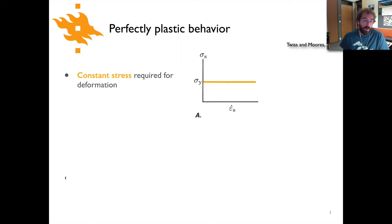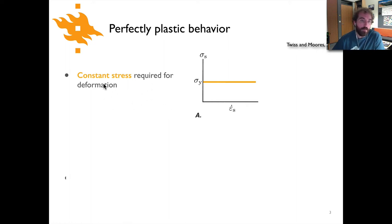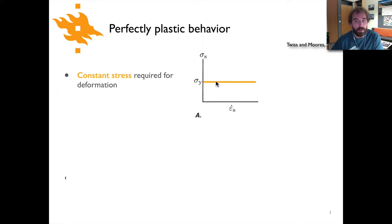We've already seen for elasticity this kind of plot where on the vertical axis we have stress and on the horizontal axis for perfect plasticity we have the strain rate — you can see the dot on top of the epsilon which indicates it is a strain rate. The relationship for perfectly plastic behavior says that we require a constant stress for deformation. This sigma_y is called the yield stress — the stress that must be met for the material to deform — and once you meet that stress you can deform at any strain rate at a constant level of stress.